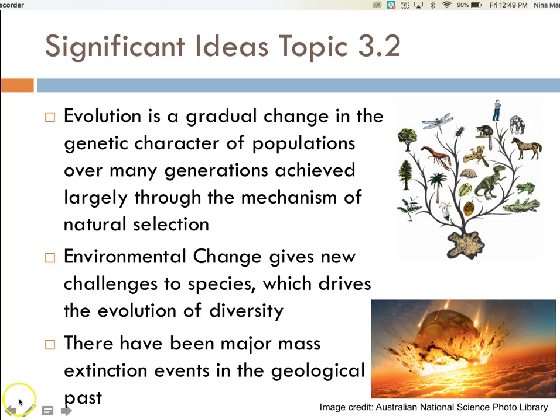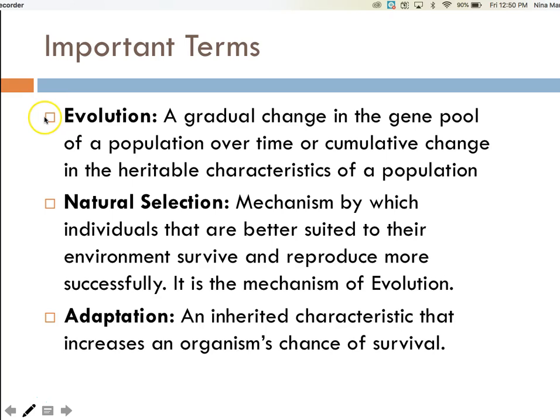You need to wrap your head around these important terms. Evolution is a gradual change in the gene pool of a population over time, or the cumulative change in the heritable characteristics of a population. Natural selection is the mechanism by which individuals that are better suited to their environment survive and reproduce more successfully. Natural selection and evolution are not the same — natural selection is the mechanism of evolution. Adaptation is an inherited characteristic that increases an organism's chance of survival.